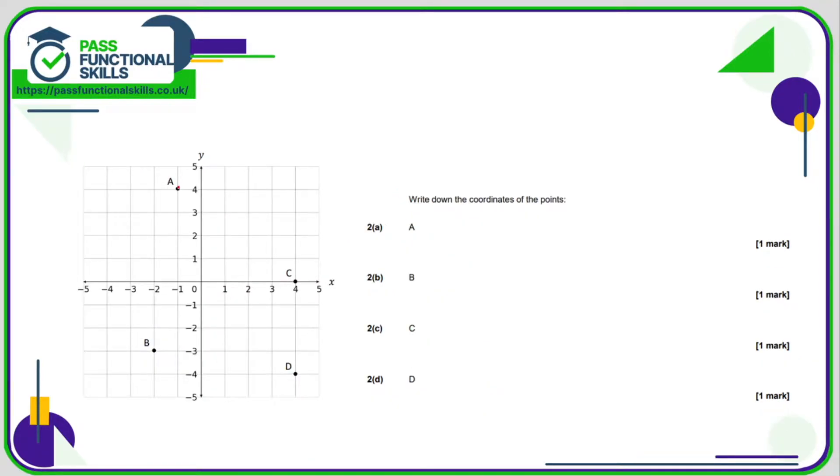Coordinates of point A are, well, we're going across to minus one and up to four, so that is minus one, four. B: we're going across to negative two and then down to negative three, so that's minus two, minus three. C: we're going across to four and not going up at all, so that's going to be four, zero. And D: we're going across to four and down to minus four, so that's four, minus four.